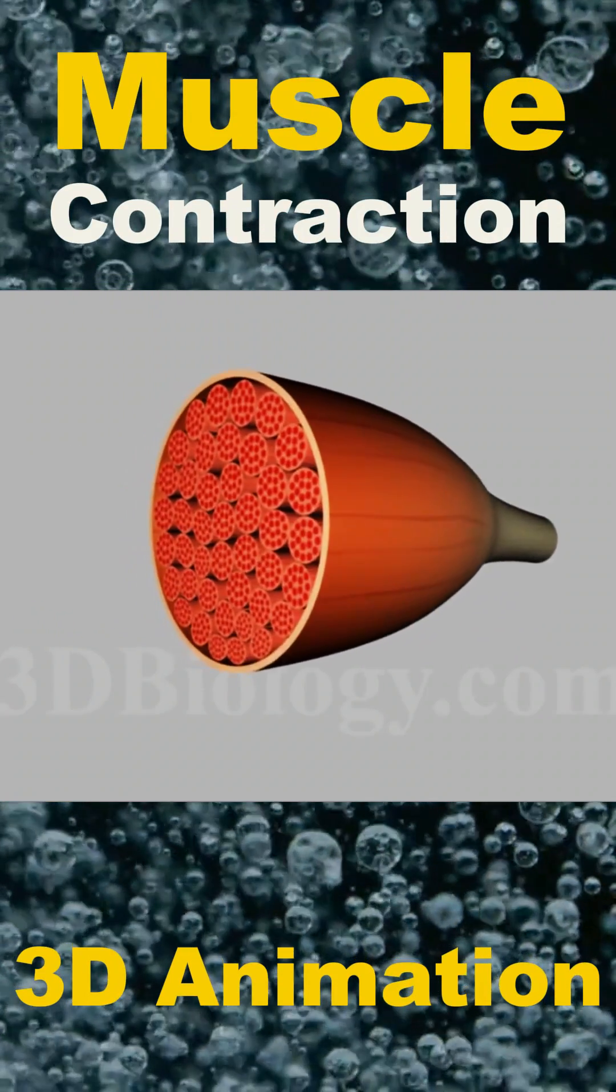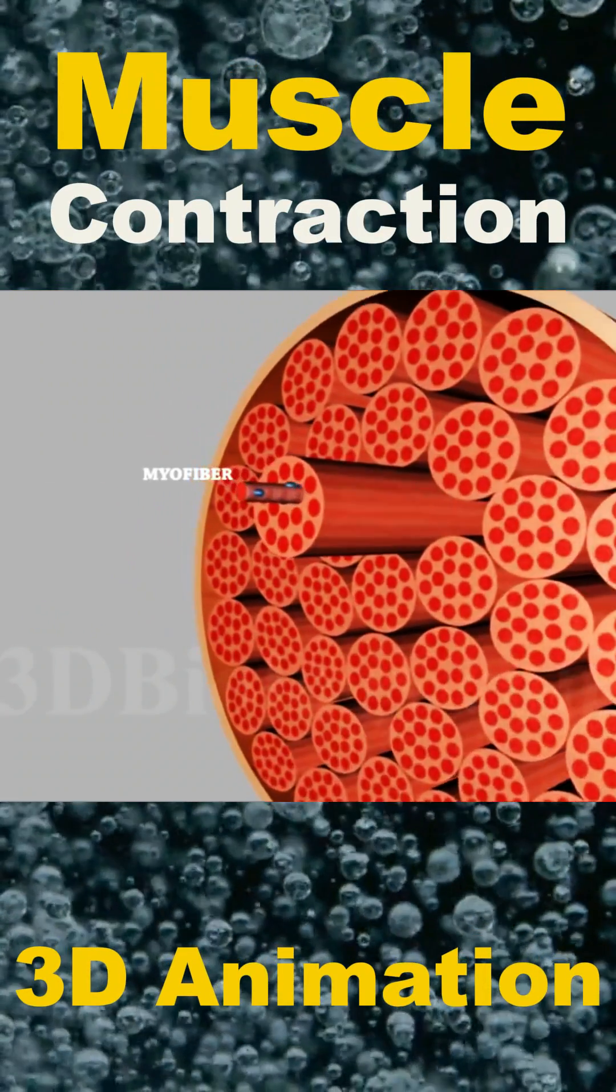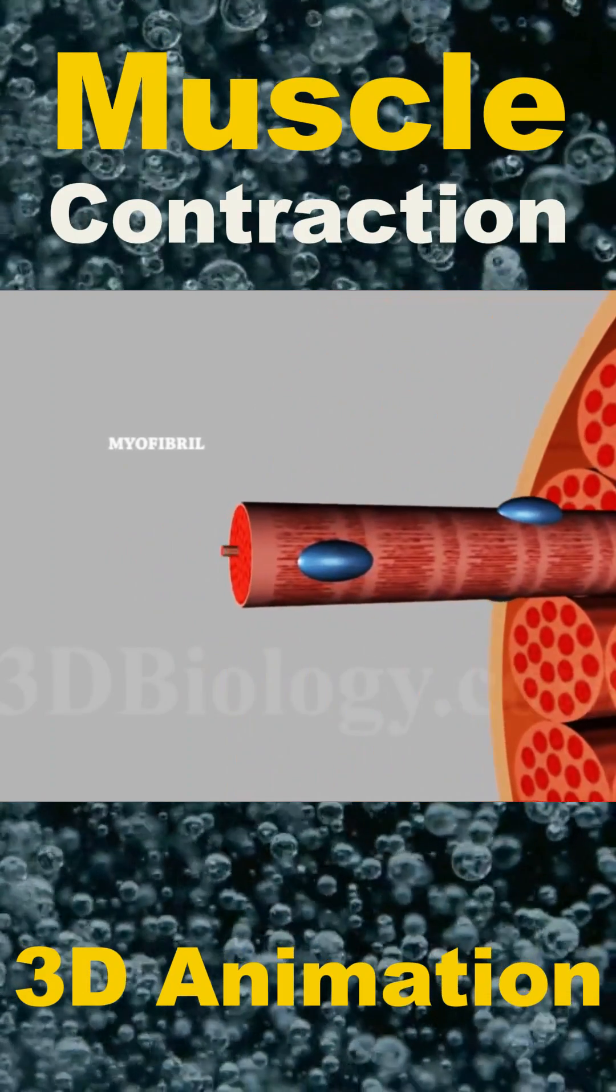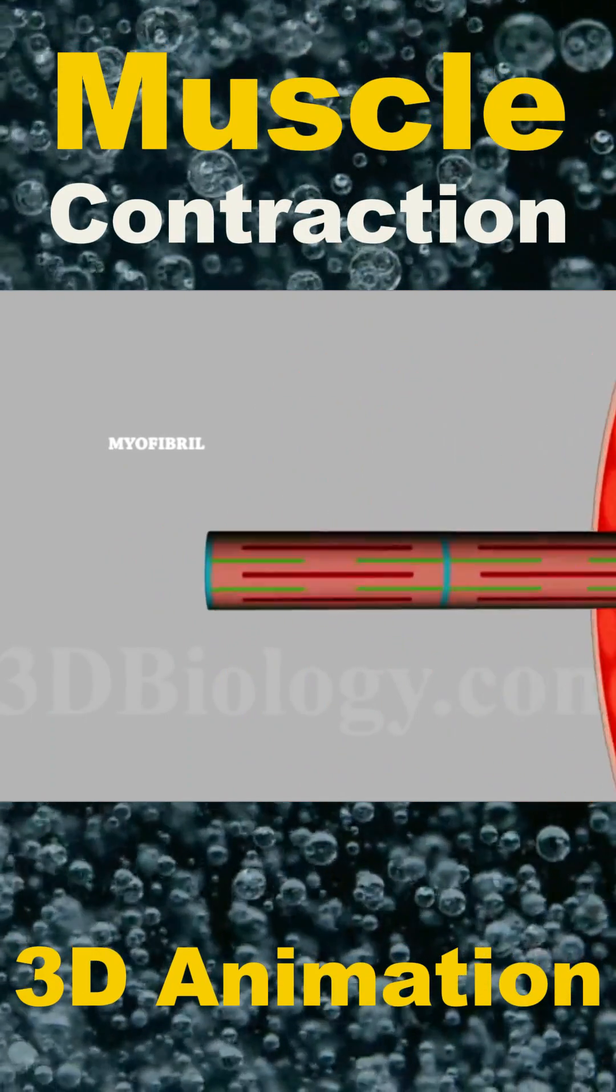A striated muscle is composed of bundles of multi-nucleated muscle cells known as myofibers. Each myofiber is densely packed with myofibrils that span its length.